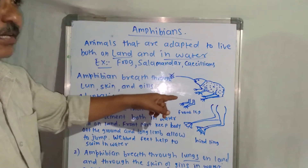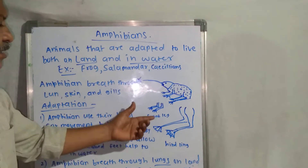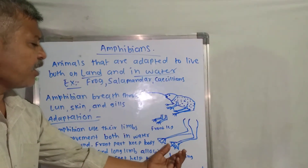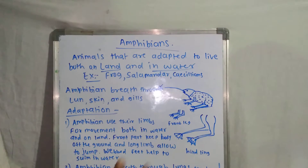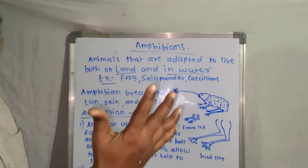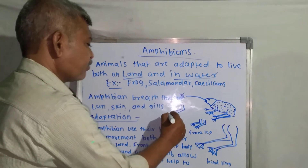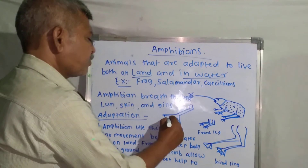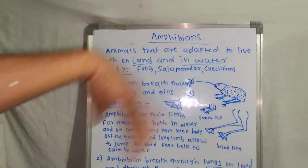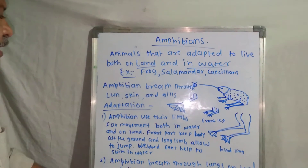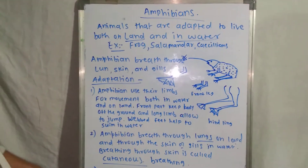Inside the water, frogs have webbed toes. Webbed toes means the skin joins the fingers of the back legs. All the fingers are joined by skin, and they are used as a paddle in the water. This helps them to swim inside the water. So these are the structural changes — their limbs are adapted.